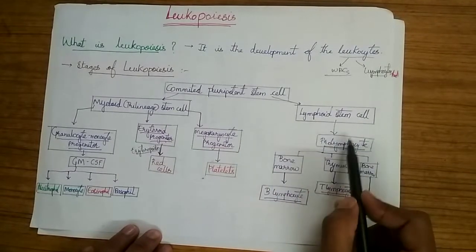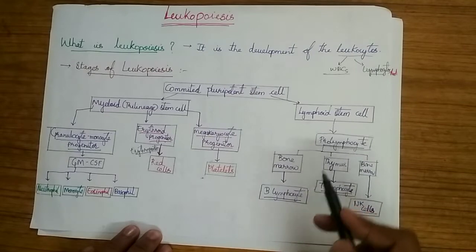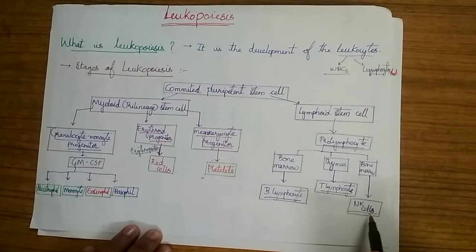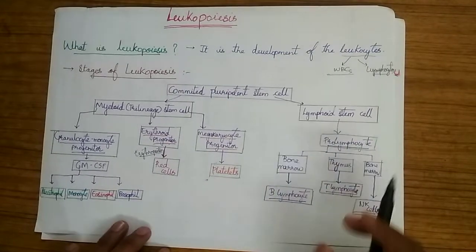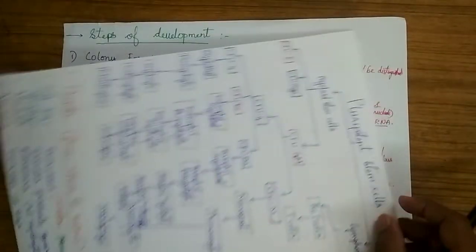The lymphoid stem cell gives rise to prolymphocytes and it divides into B lymphocytes, T lymphocytes and natural killer cells in the bone marrow, thymus and bone marrow correspondingly. For easy understanding of this topic, let's see this flowchart.